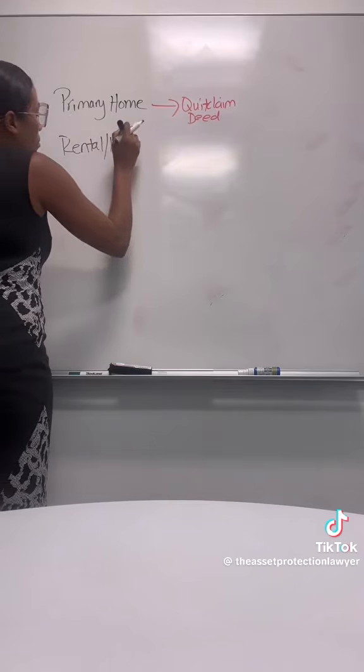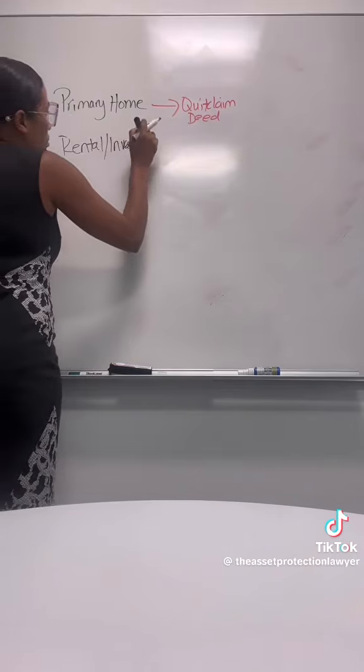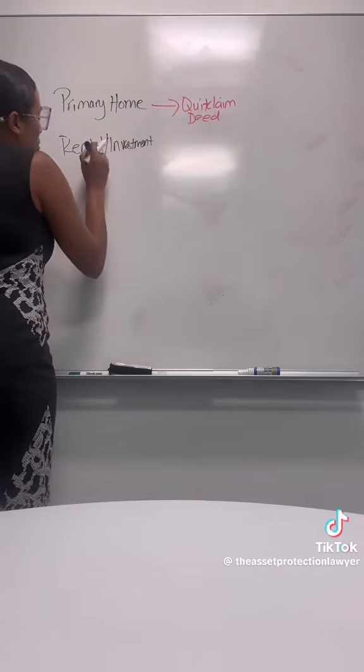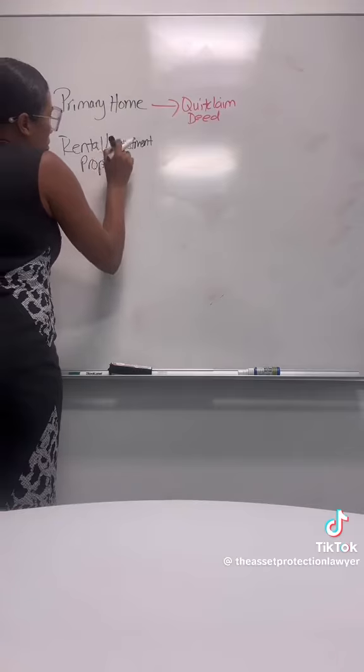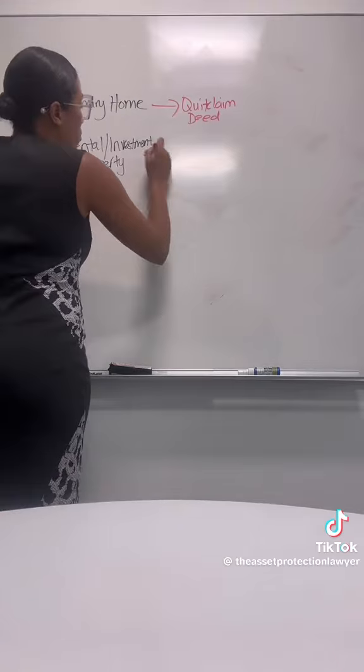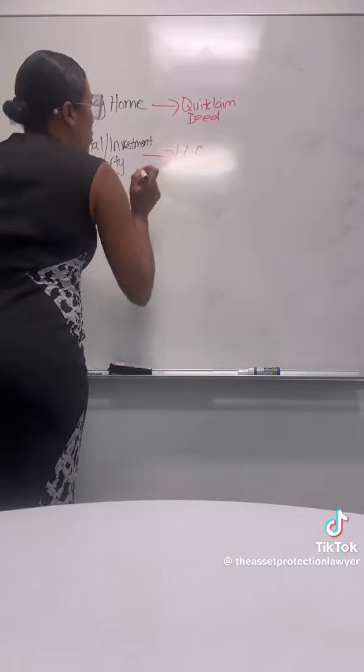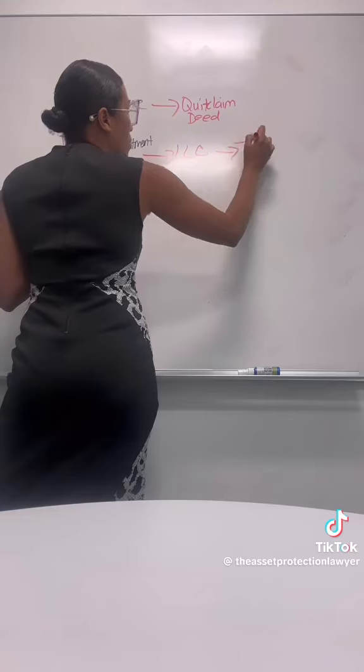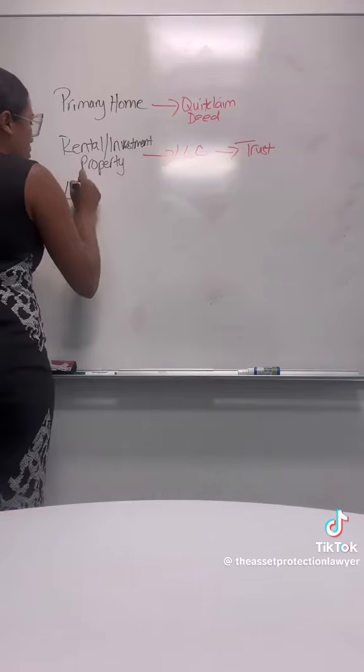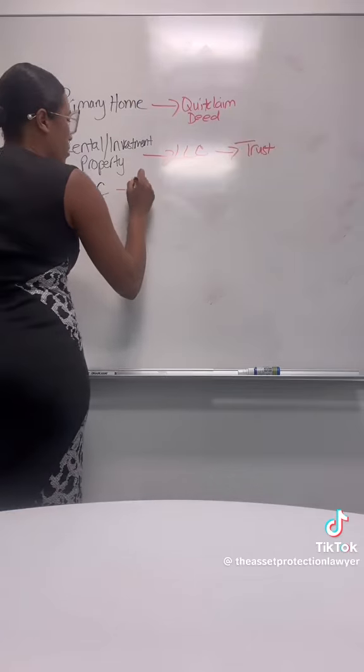If you own an investment property, the first step is to put the property in an LLC and then assign the LLC membership interest to the trust using an assignment of transfer document and amending your operating agreement.